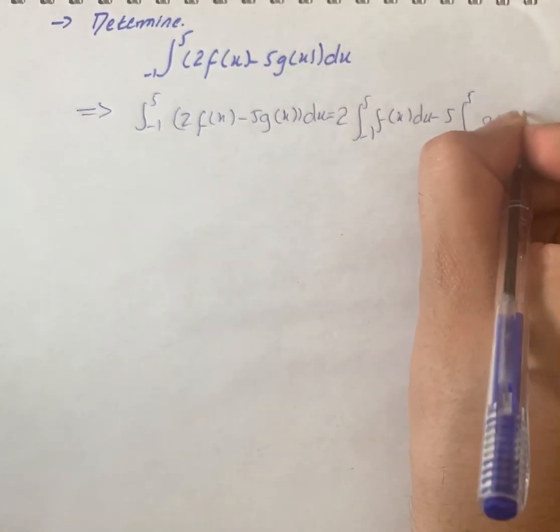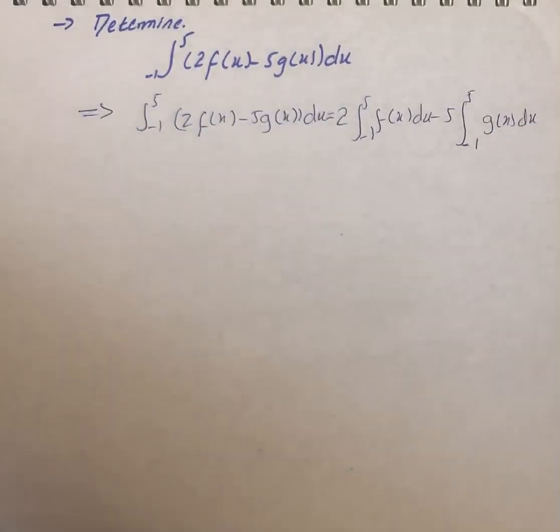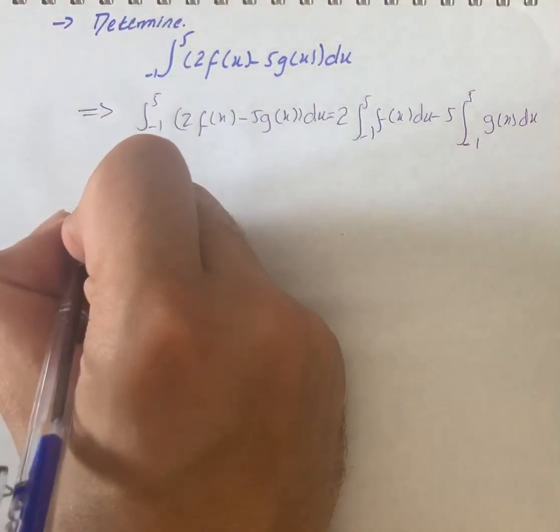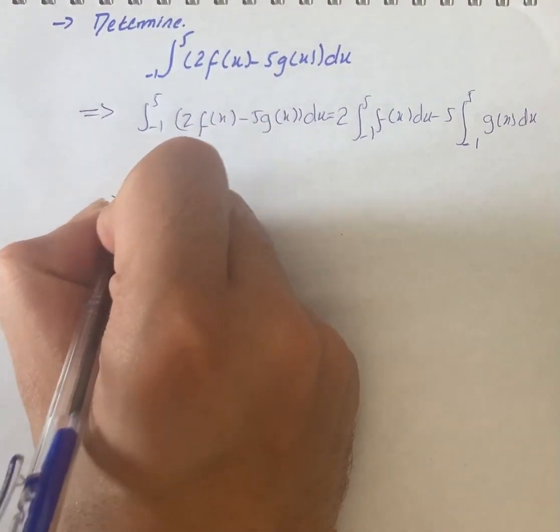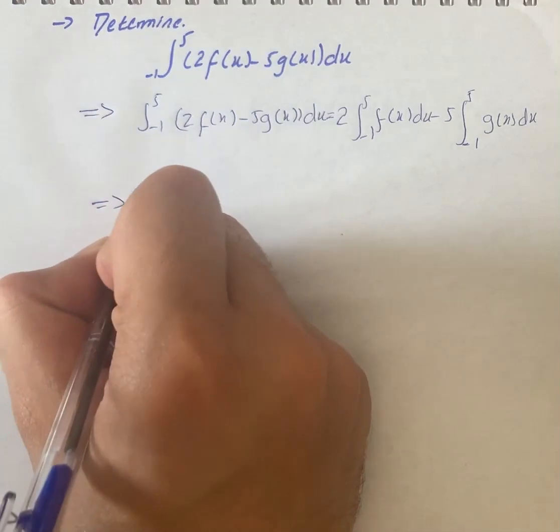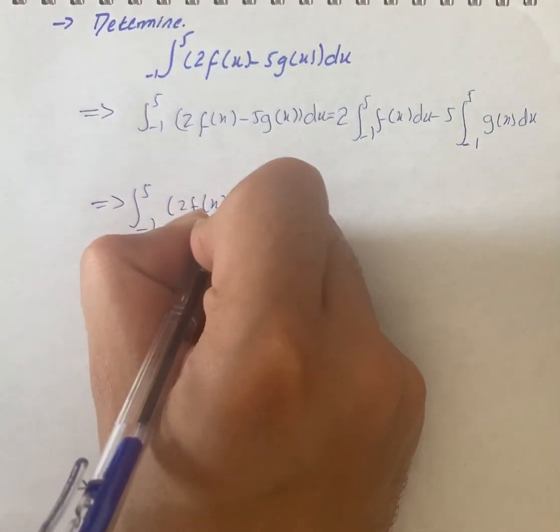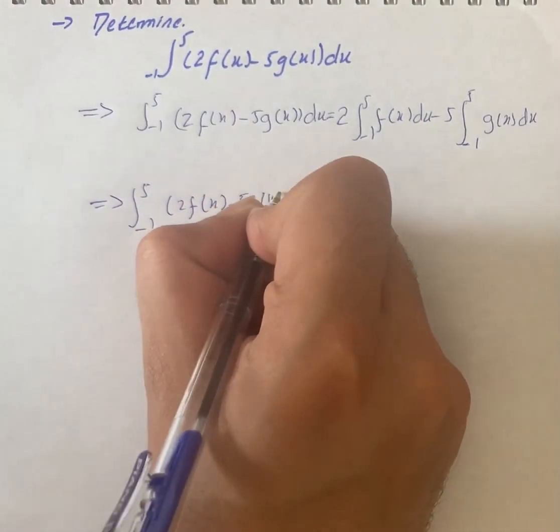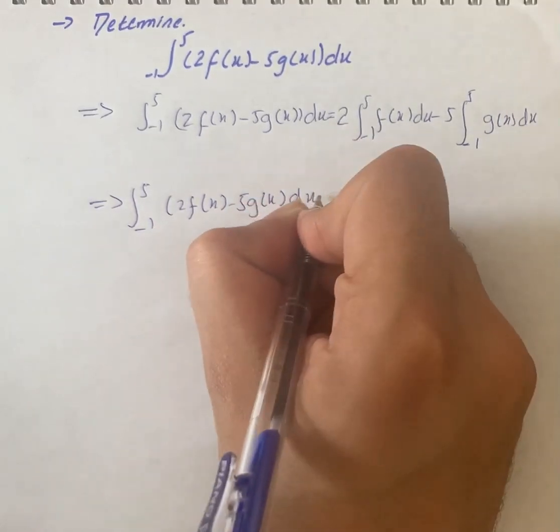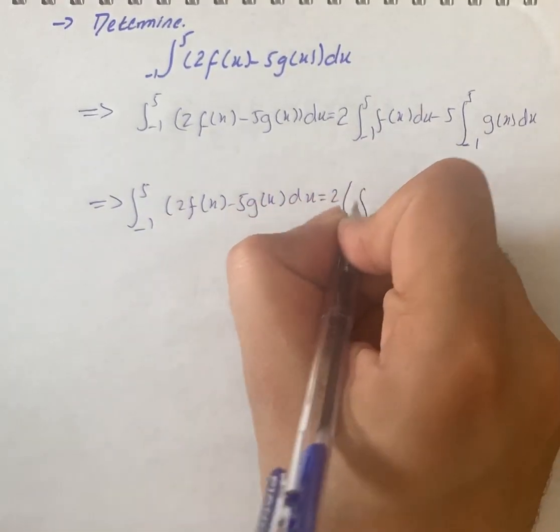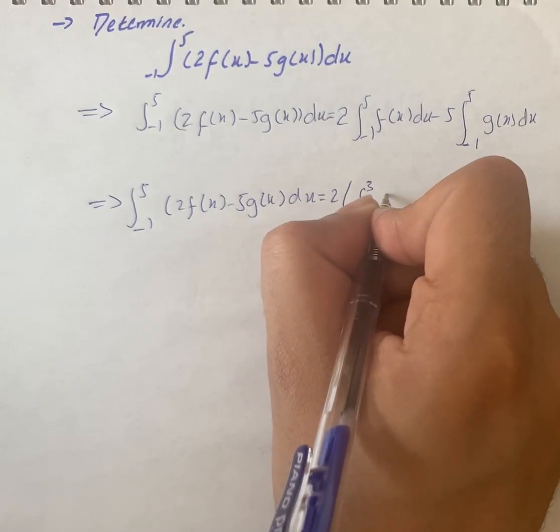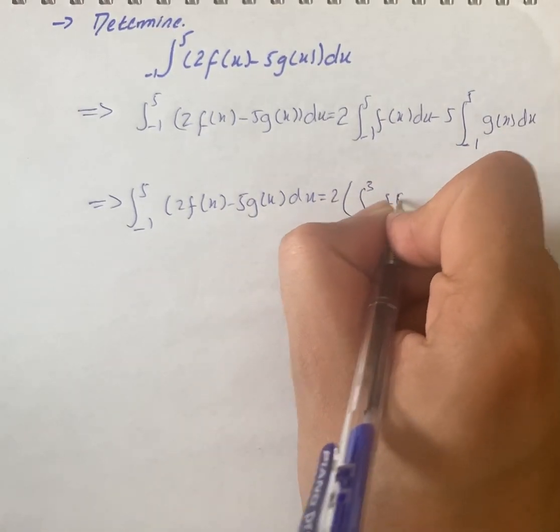So we will split the above integrals. By splitting, we have ∫[1,5](2f(x) - 5g(x))dx, that is equal to 2 times ∫[1,5]f(x)dx minus ∫[1,5]f(x)dx.